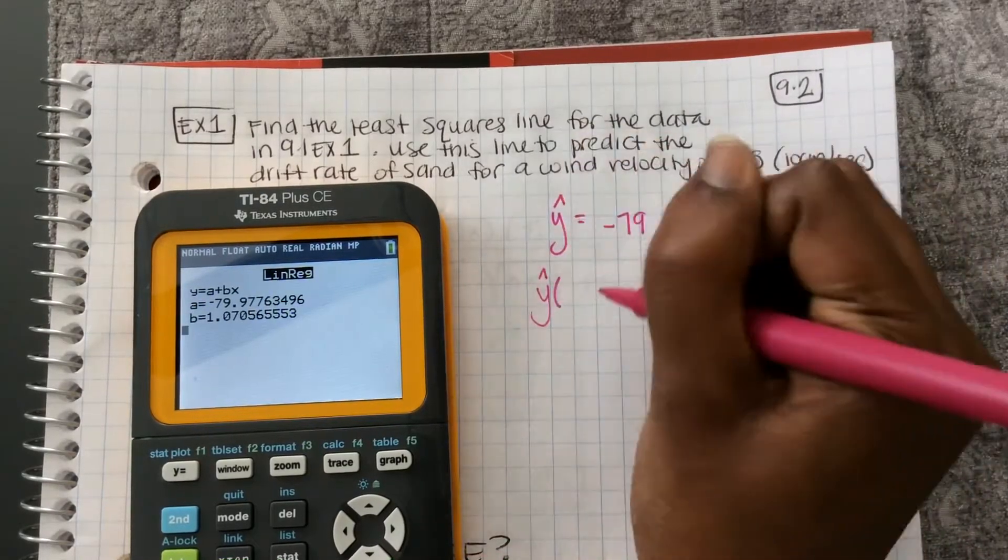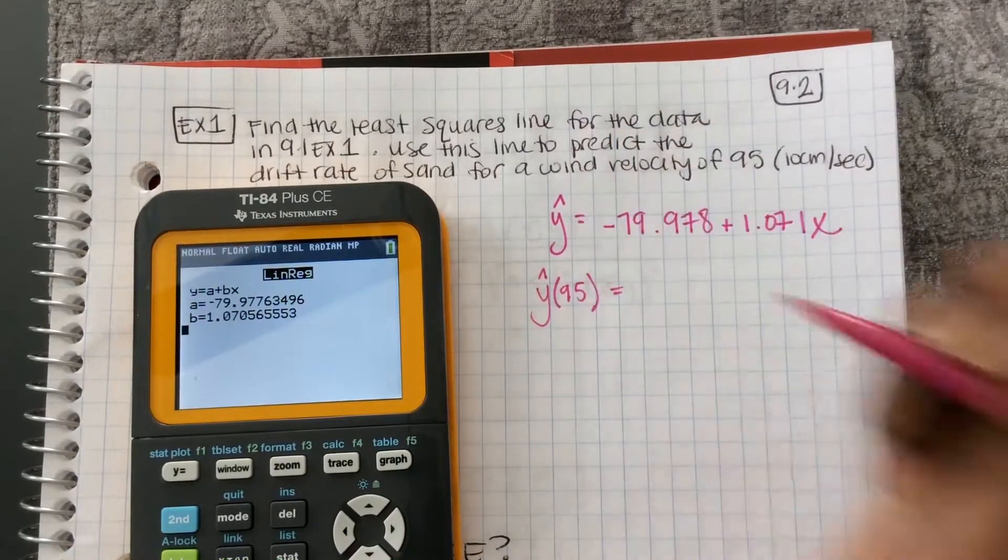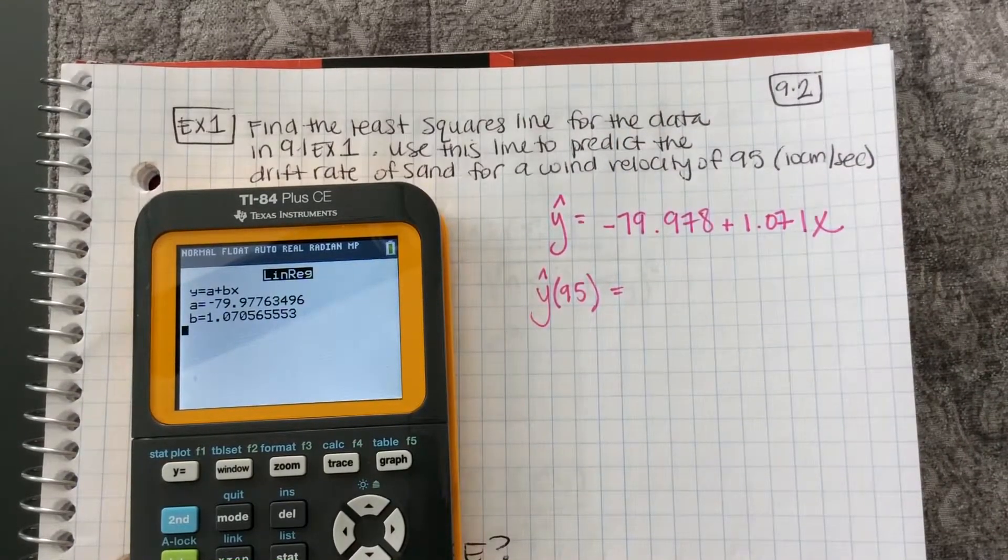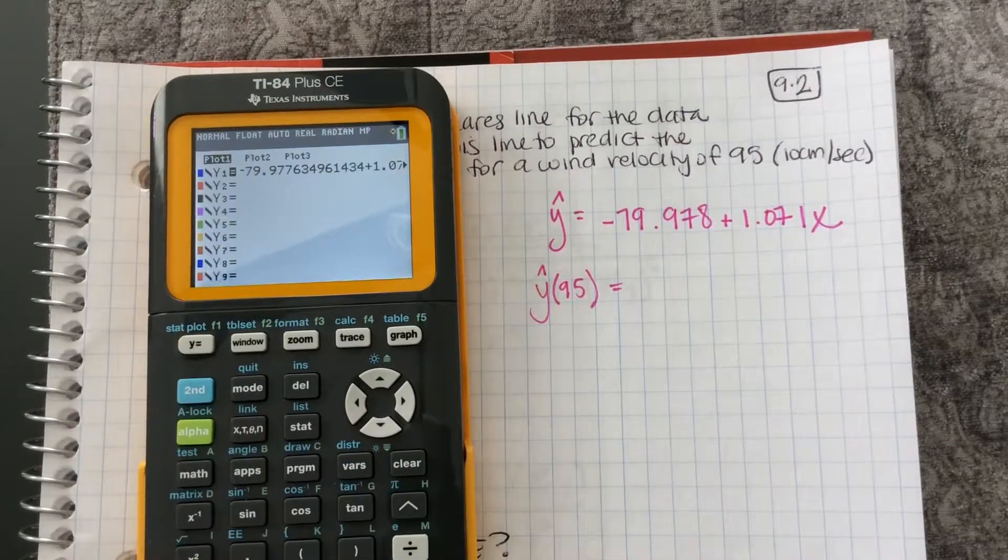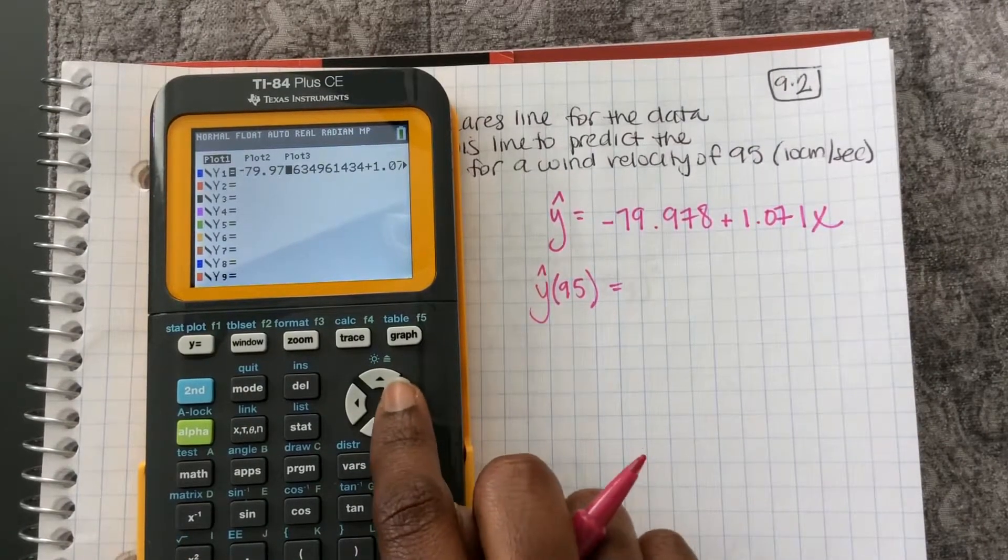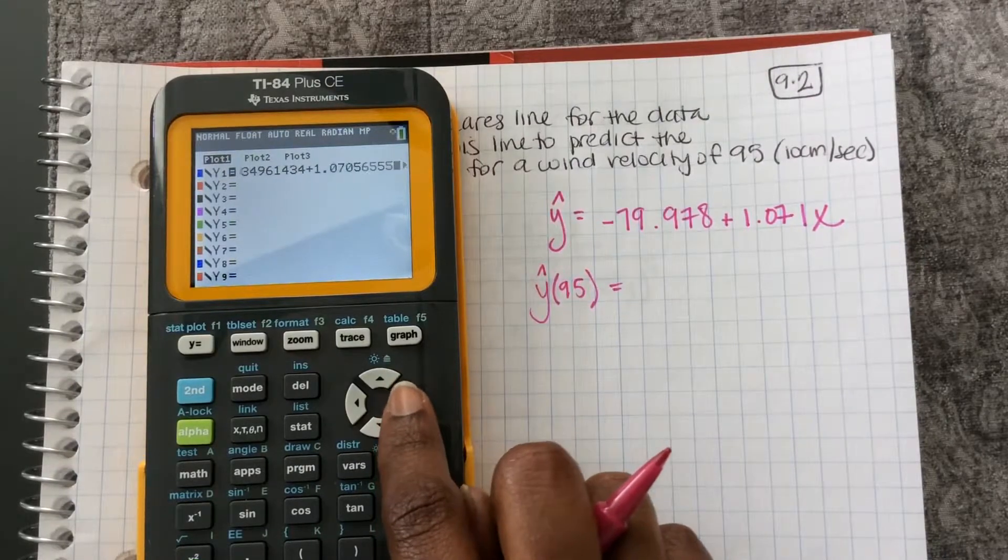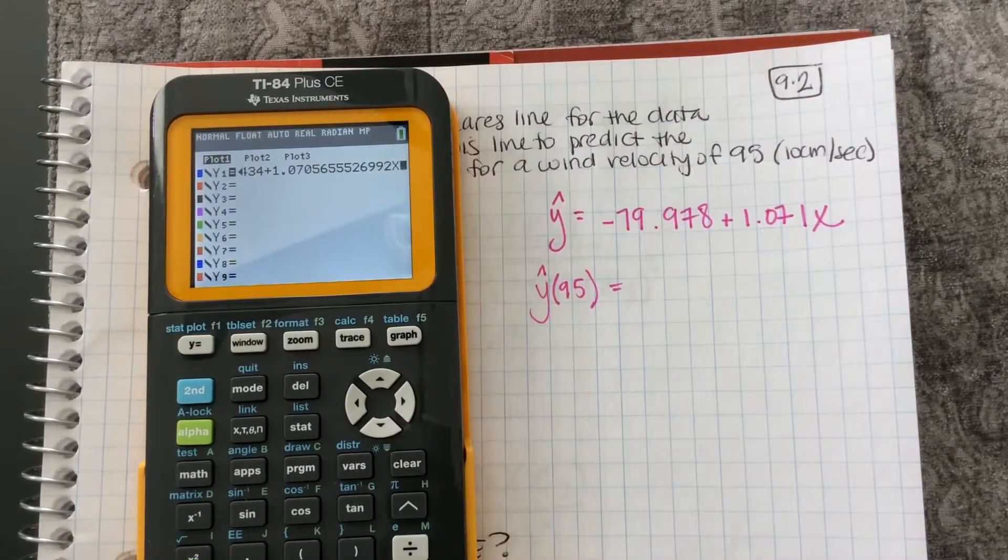So y hat of 95 is going to equal what? So I'm going to use my calculator to calculate. So remember if I go to y equals, there's my line. And it has all the decimals typed in there for me. That's the purpose of doing the storing.